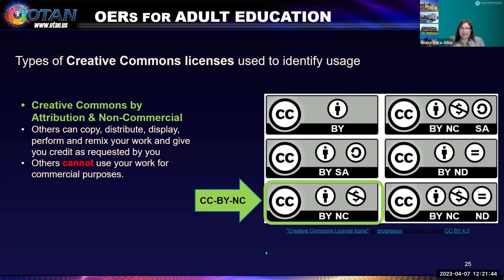The next license is CC BY NC — Creative Commons by attribution and non-commercial. Others can copy, distribute, display, perform, and remix your work and give you credit, but others cannot use your work for commercial purposes. If I'm writing a book and want to use your image, I cannot sell my book — I have to use one of the Creative Commons licenses if I want to use your openly licensed image.